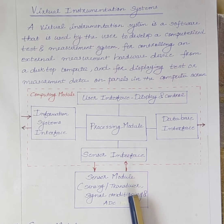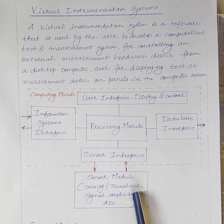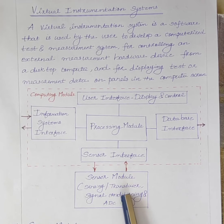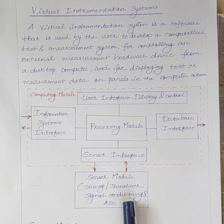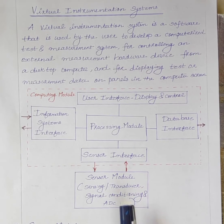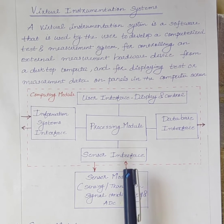The signal conditioning unit is used for amplification, isolation, filtering, etc. The output of the signal conditioning unit is given to the analog-to-digital converter, which converts the detected and conditioned voltage into a digital value.